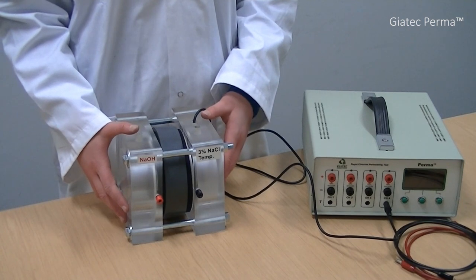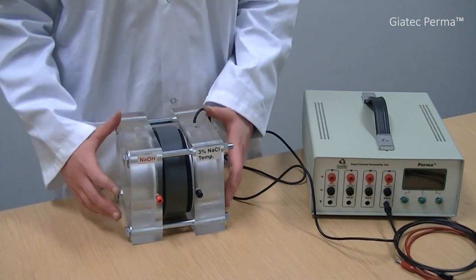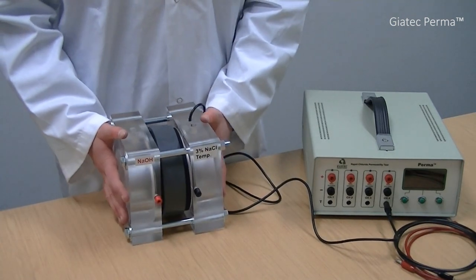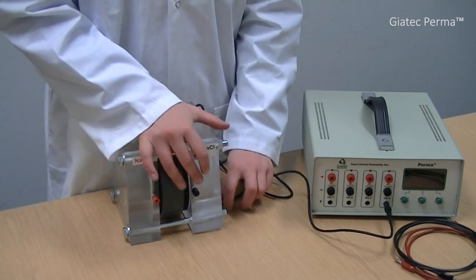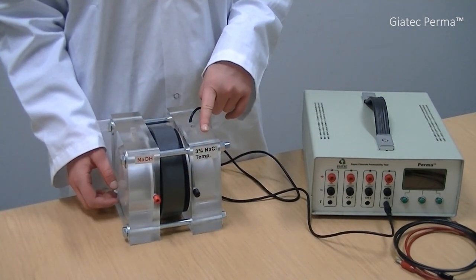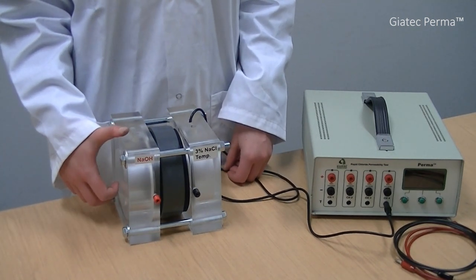Once the cell is assembled, leakage testing must be conducted. For this purpose, I place the cell in a position so that the filling inlets on the cell are facing up. I fill the black cell with a 3% sodium chloride solution and the red cell must be filled with a 0.3 normal sodium hydroxide solution.